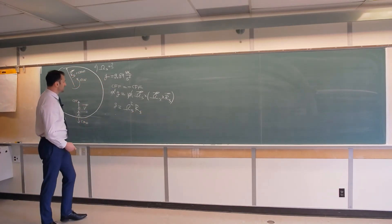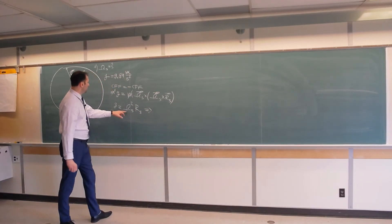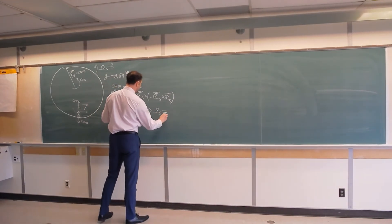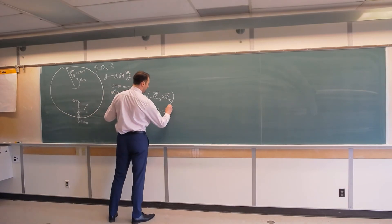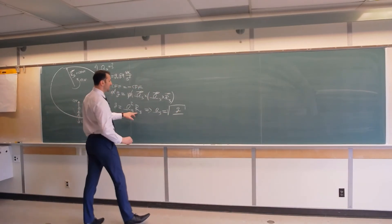We basically solved the problem because the only unknown here is omega s. So omega s is equal to square root g over r s.